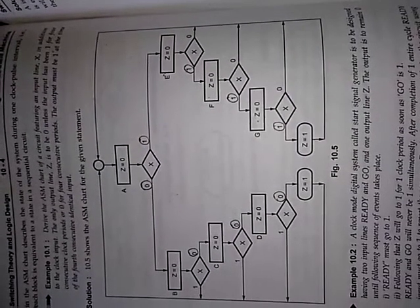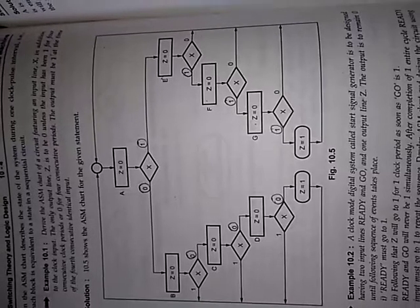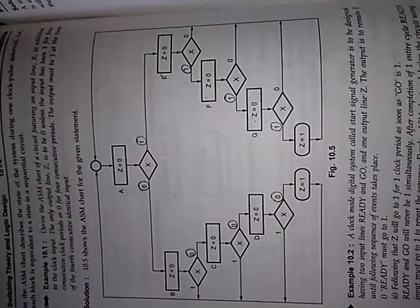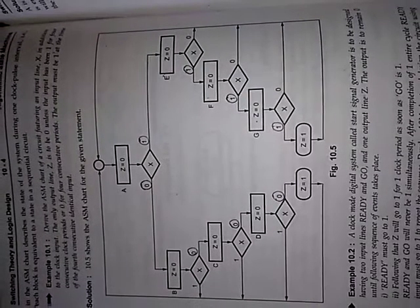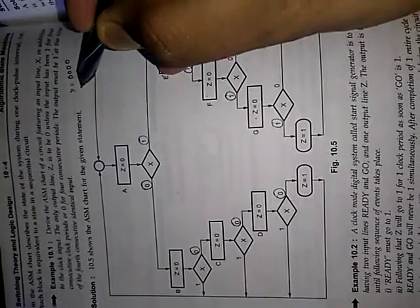Consecutive means side by side. Identical means same. So the same output should be present side by side. That means you should get X equal to four zeros or you should get X equal to four ones.